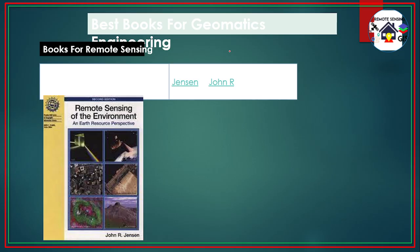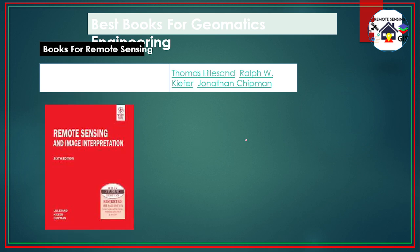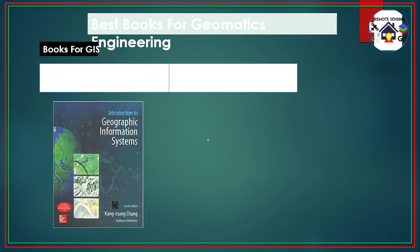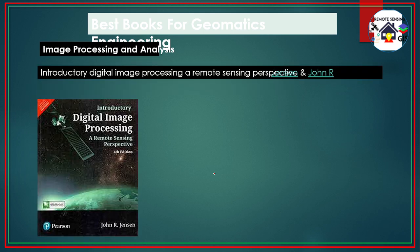For recommended books: for basics of Remote Sensing and GIS — 'Remote Sensing of the Environment: An Earth Resource Perspective' is a very good book. Then 'Remote Sensing and GIS' by Vasdev Vattor, an Indian author book in easy language, is highly recommended. For Digital Image Processing and Image Interpretation, 'Lillesand and Kiefer' is recommended. For Geographic Information Systems, these cover the basic section of 55 marks. For Surveying and Mapping, BC Punia and Kumar Jain (Volume 1) are recommended. For digital image processing perspective, both editions cover Section B.